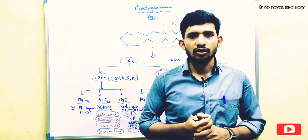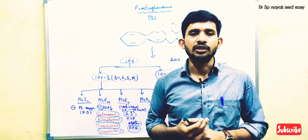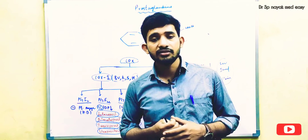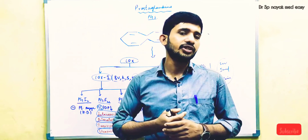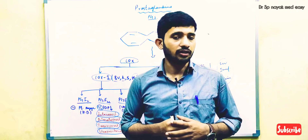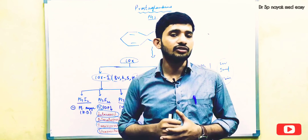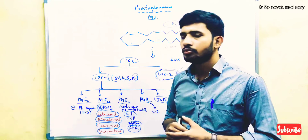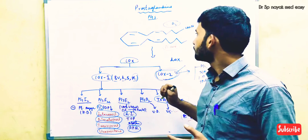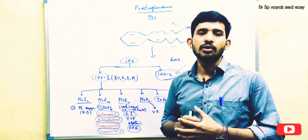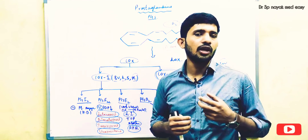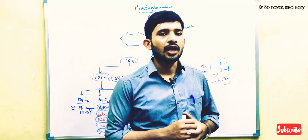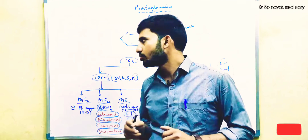Most of us think that prostaglandins are inflammatory mediators and they cause pain, fever, and inflammation. Not only that, prostaglandins are also very useful in the body. They are very important in the GI tract, which maintains the release of acid and protects the GI layer. Prostaglandins are also very important in kidneys, maintaining glomerular filtration rate (GFR), and they are also important in the cardiovascular system and in the brain. We have many prostaglandin analogues used as drugs in peptic ulceration, glaucoma, pregnancy conditions, to induce labor, and in postpartum hemorrhage.